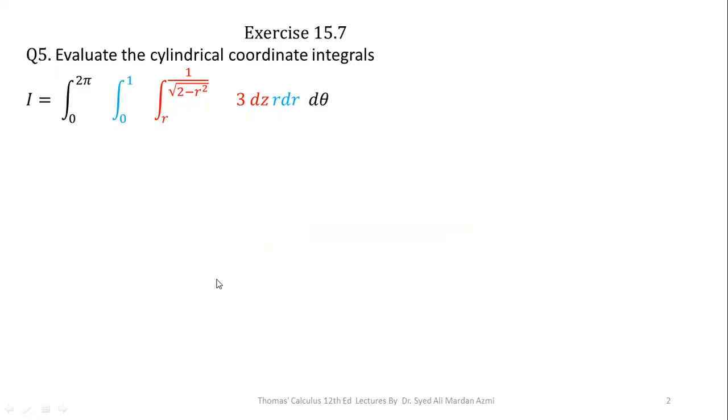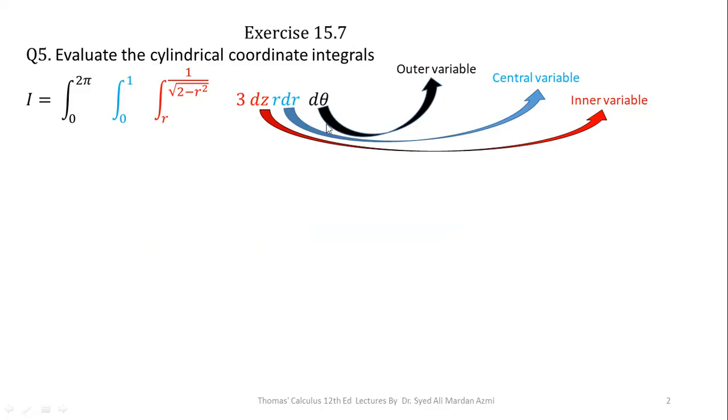Now we will learn question number five from exercise 15.7 of Thomas Calculus 12th edition book. In triple integrals, our most inner variable is always z, our central variable is always r, and our most outer variable is always theta. And this order is fixed in cylindrical coordinate system. Now the limits of z are 0 to 1 over square root of 2 minus r square. Limits of r are 0 to 1, and limits of theta are 0 to 2 pi in this given question.